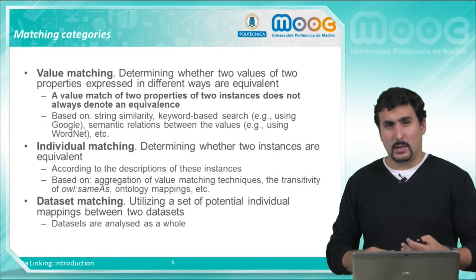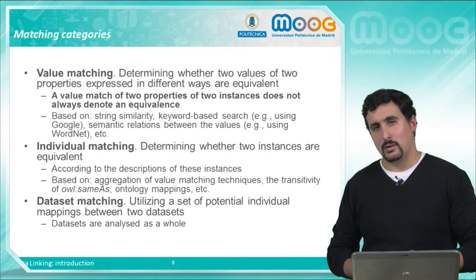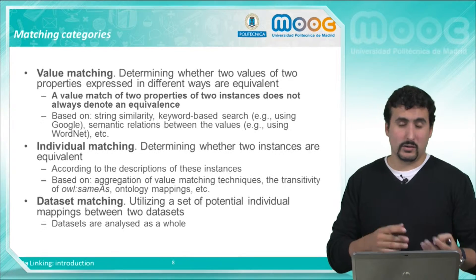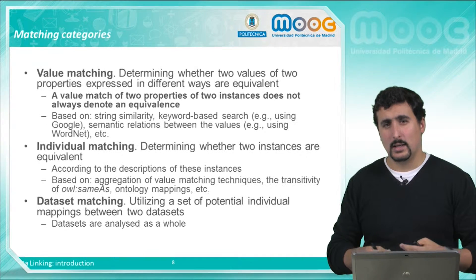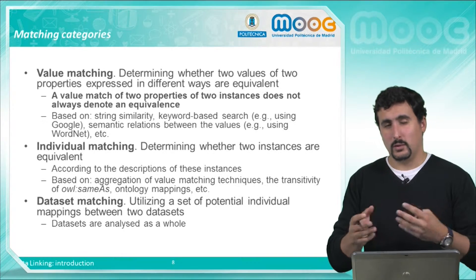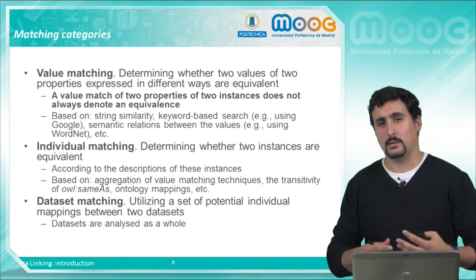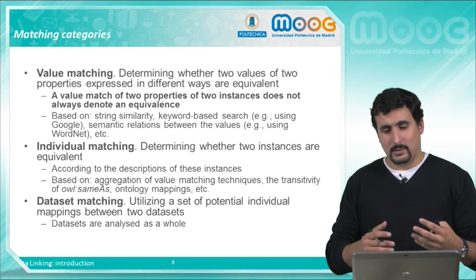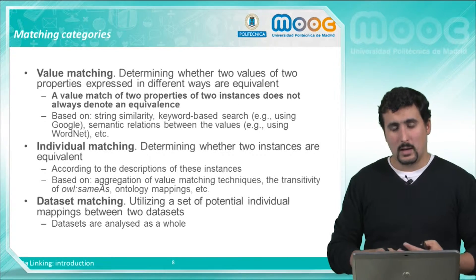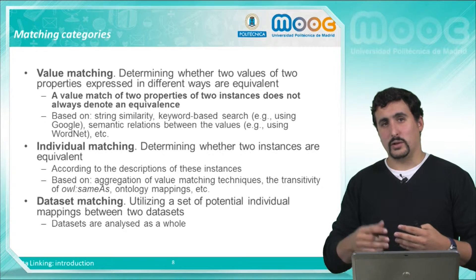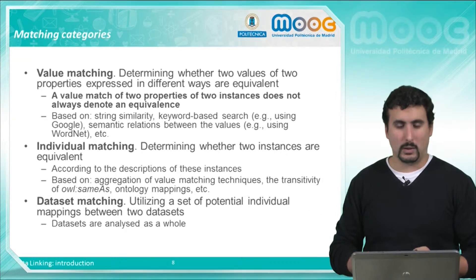Finally we can look for matches at the dataset level — we can analyze the information about both datasets, the origin and the target one, as a whole. We get the individual matches from those datasets and refine the links based on the information about the dataset. We can understand these categories — value matching, individual matching and dataset matching — as an incremental process in which each step is built upon the results of the previous one.